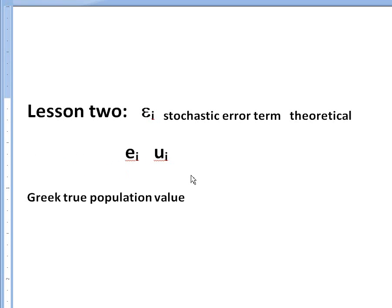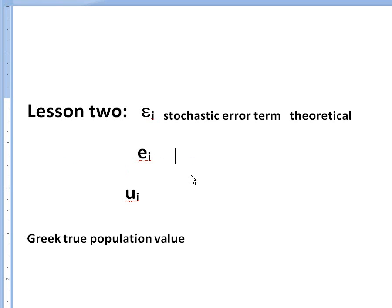A lot of times people would call these epsilon i's the stochastic error term, meaning this is theoretical, we don't observe these error terms. But when we actually estimate a model and we observe these error terms, we call them e i's normally. So this is an observed error term, usually we'll call them at that point a residual.